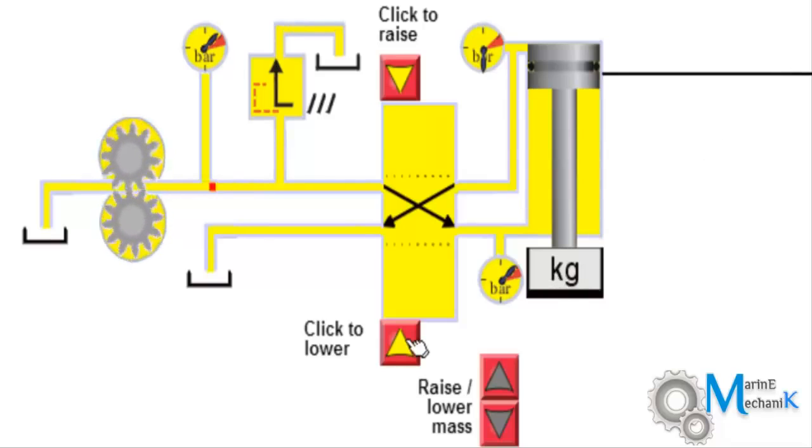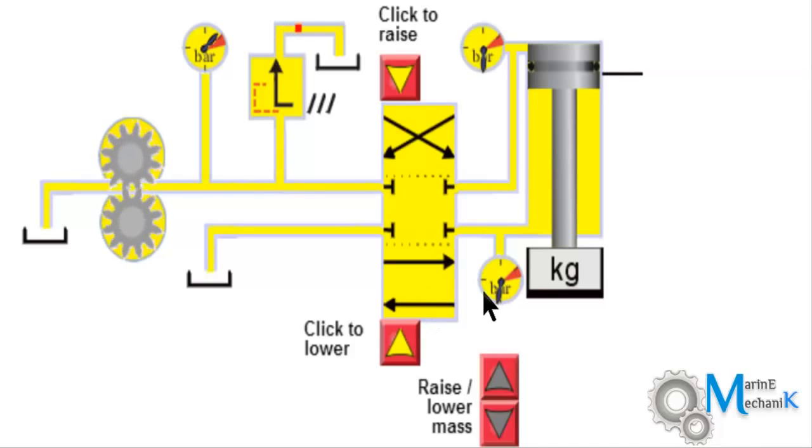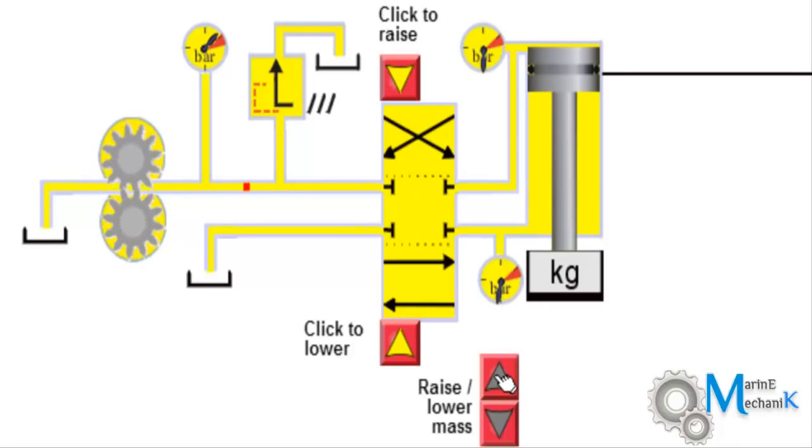Now I am going to put it back to neutral position where the pressure drops immediately because there is no more flow of oil as all the ports have been blanked. Now the pressure starts to fluctuate and you can see the piston slowly starts to drop down because the weight is going to compress the oil and increase the pressure here.